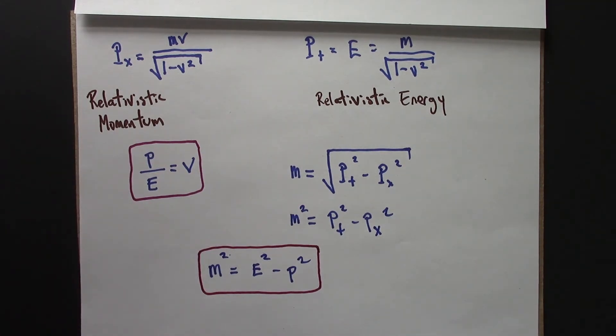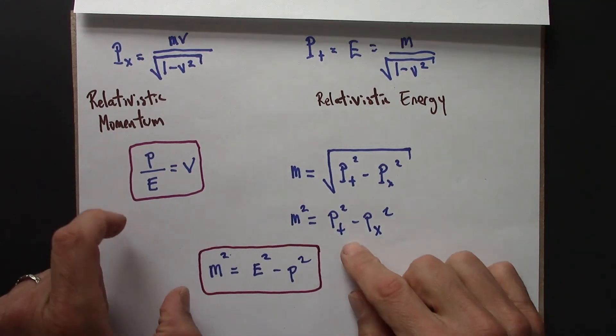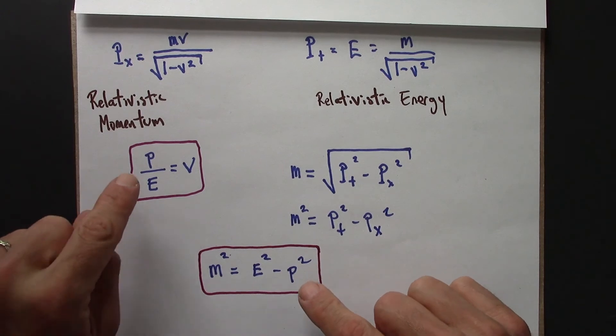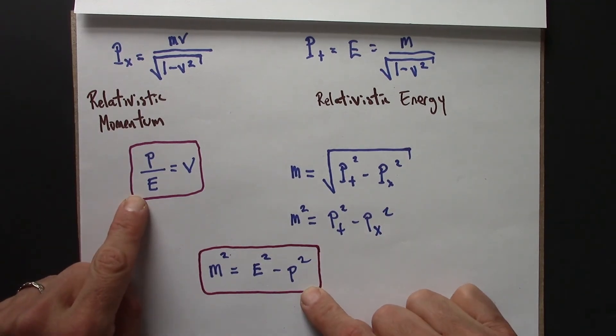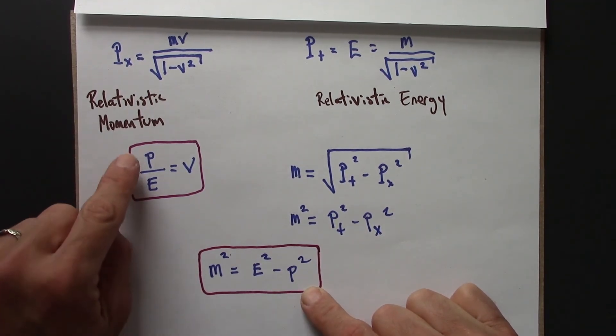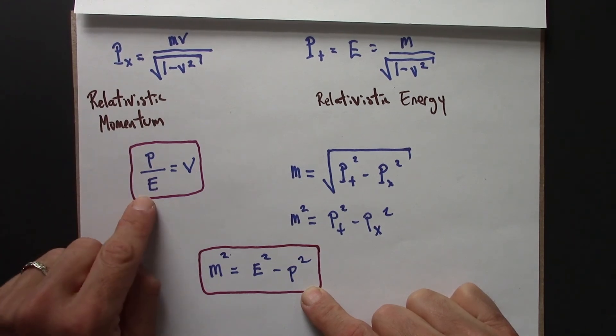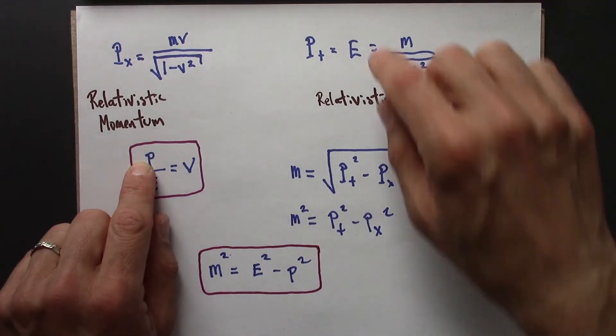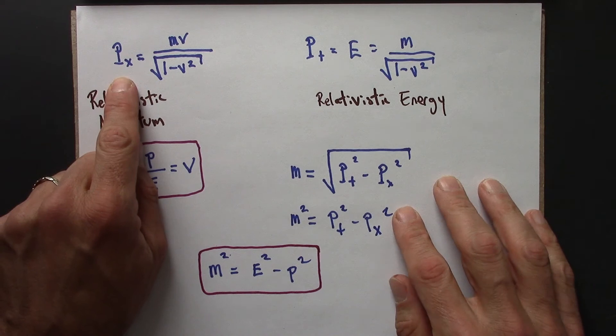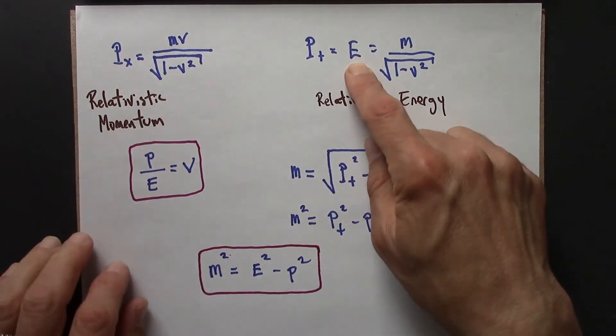Okay, so we have these two relationships. These are relationships between e and p, relativistic energy, relativistic momentum. We have this formula for relativistic momentum. We have this formula for relativistic energy.